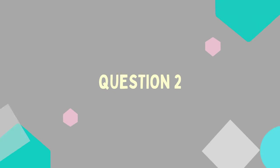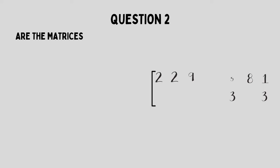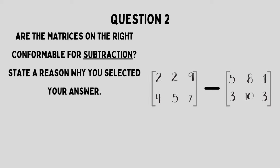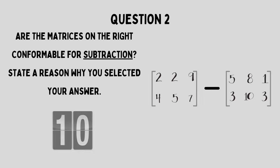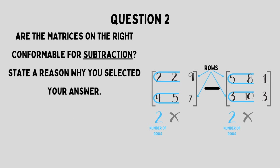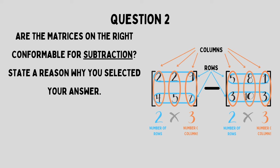Question number two: Are the matrices on the right conformable for subtraction? State a reason why you selected your answer. If you said they are conformable, you are correct, because both matrices are of the same order — they have two rows and three columns. They both have this in common.